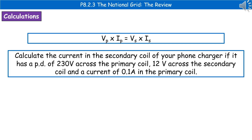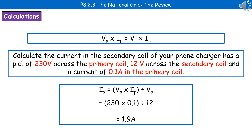A typical exam question would ask: calculate the current in the secondary coil of a phone charger if it has a potential difference of 230 volts across the primary coil, 12 volts across the secondary coil, and a current of 0.1 amps in the primary coil. The first thing to do in a calculation question is highlight, underline, circle, or jot down the important information — shown here in red.